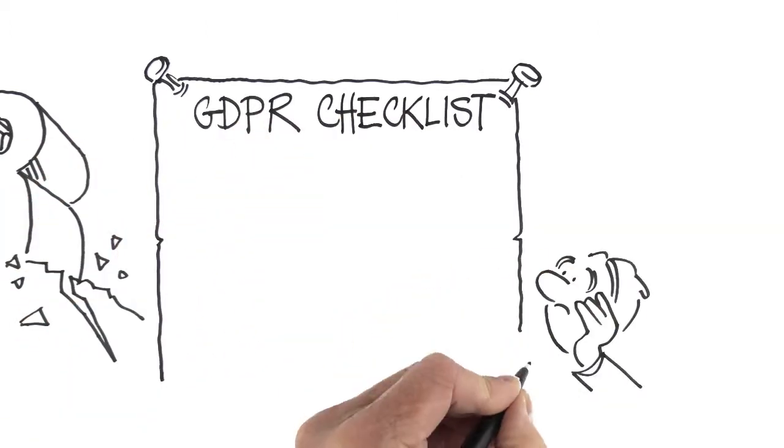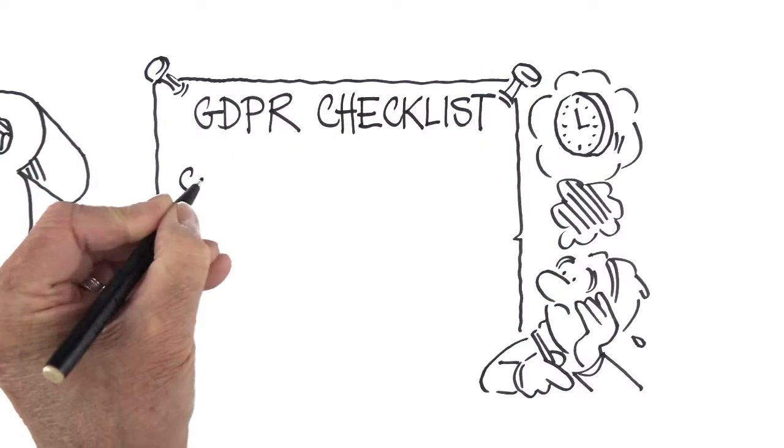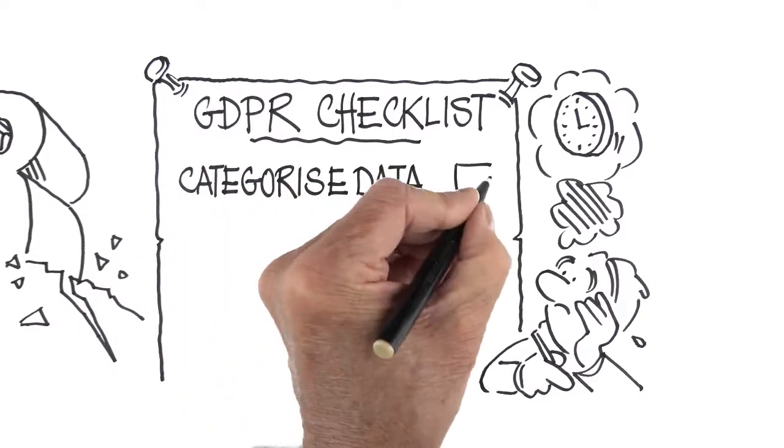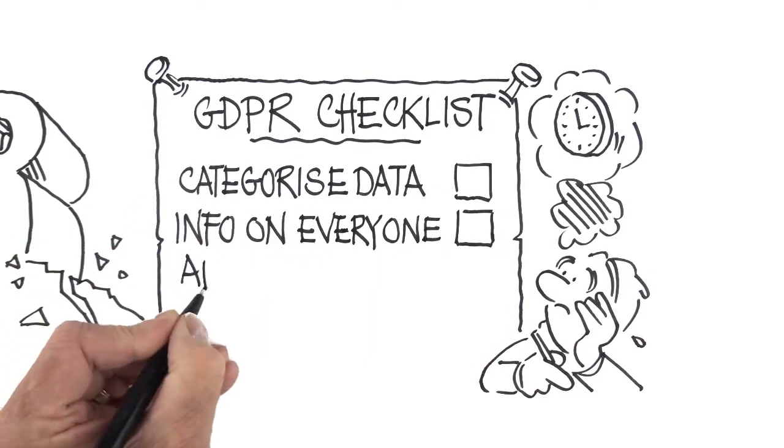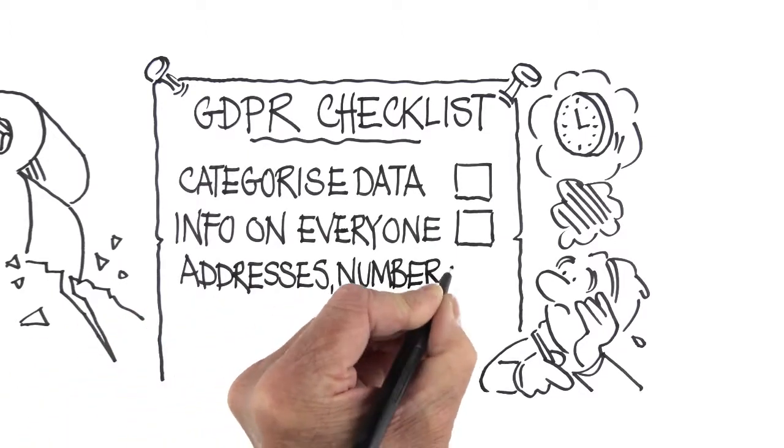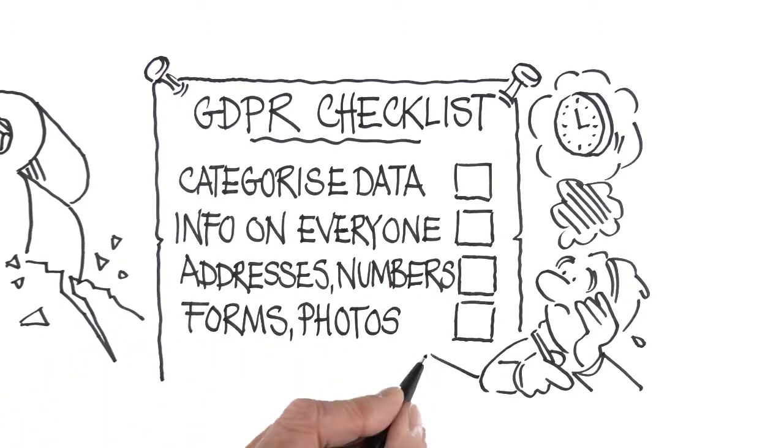So, items that need to be on your GDPR checklist. You have to categorise all the data you hold, all the information you have, for everyone that has passed through your company - their addresses, personal details, forms, even photographs.